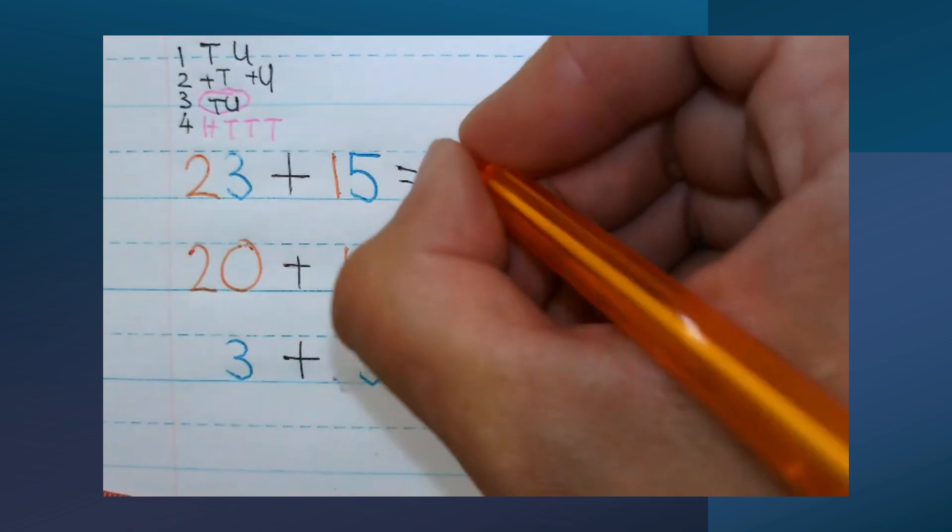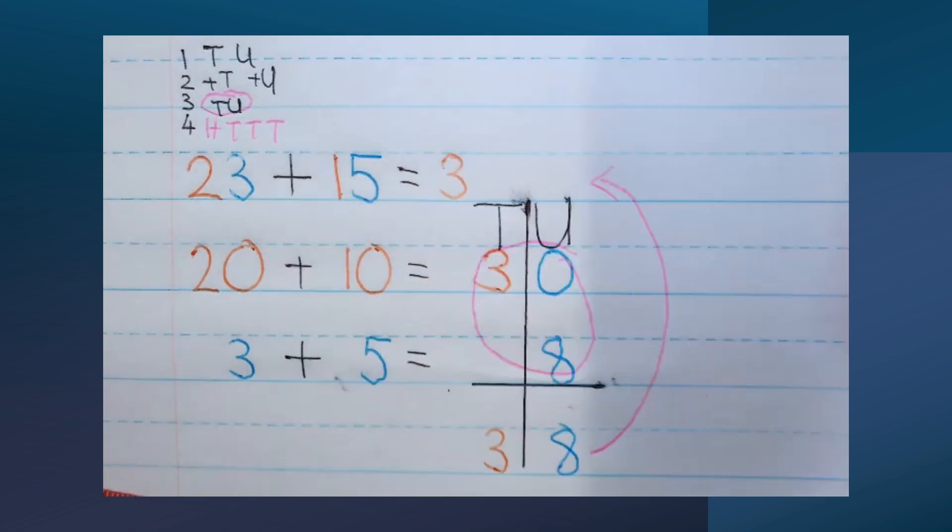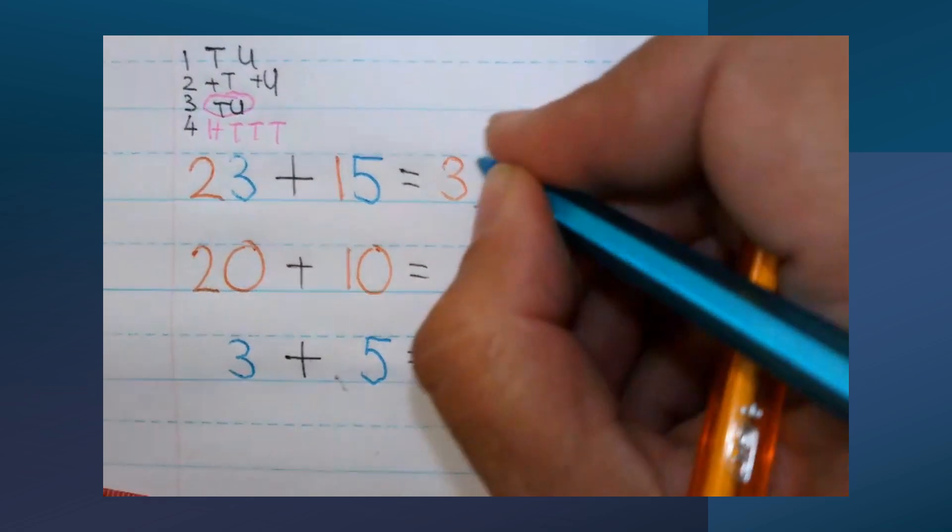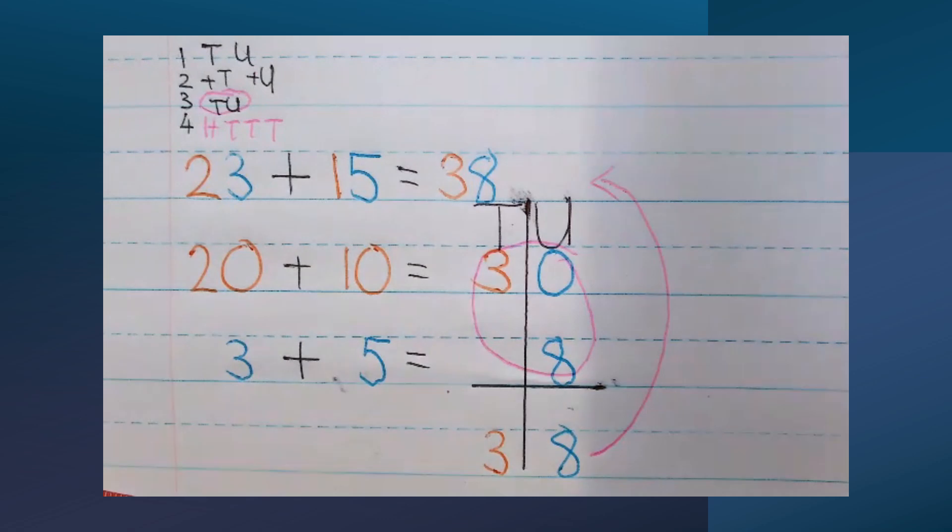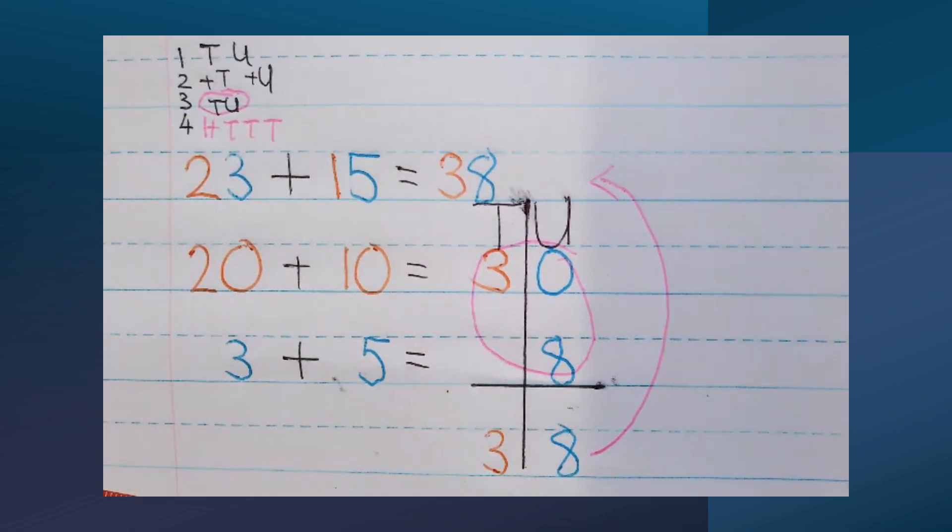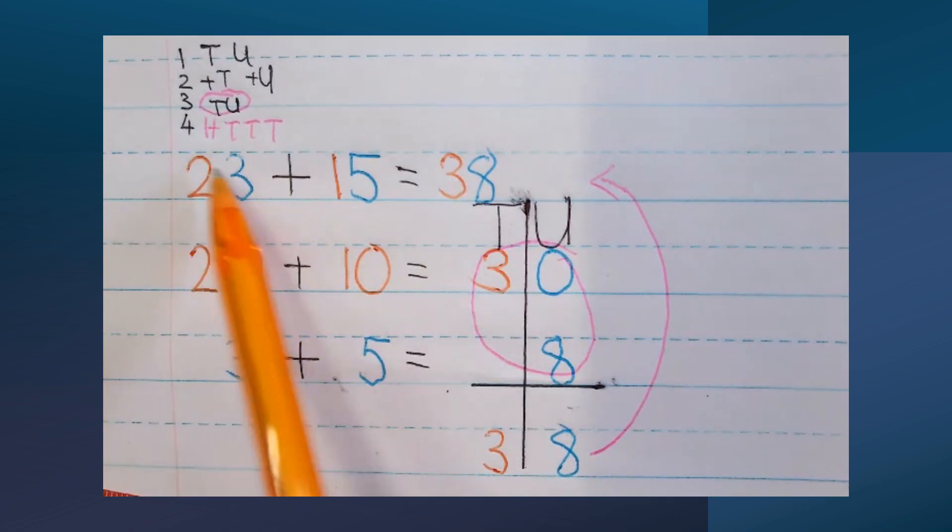So I've got my answer, 38. So 23 plus 15 equals 38. Just quickly, the steps again: I start with the numbers they give me and I break it up into tens and units.